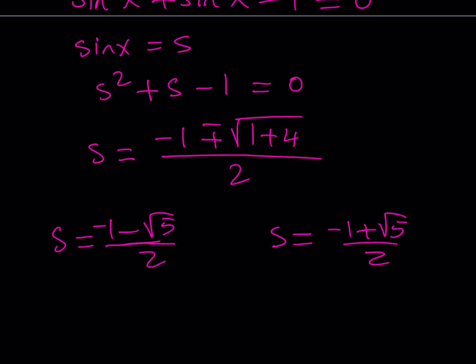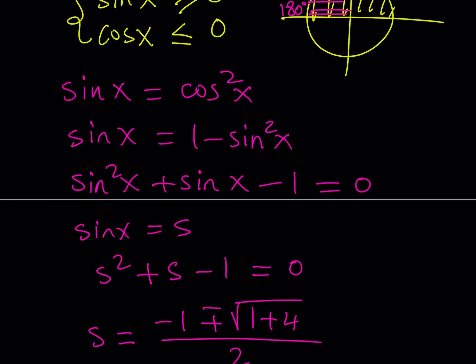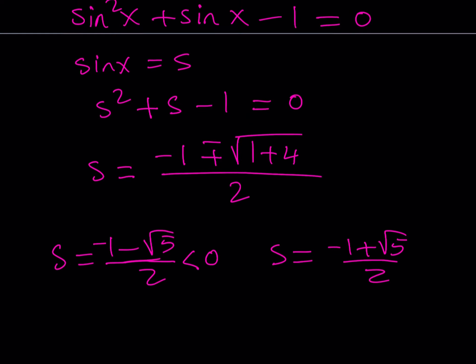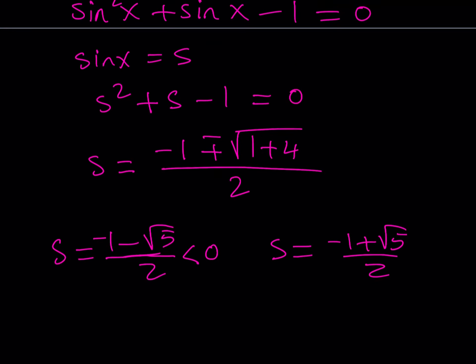Notice that negative 1 minus root 5 over 2 is negative. This is less than 0 and we don't want the negative solutions because sine x needs to be greater or equal to 0. But not only that, this value is also less than negative 1 so it's not even acceptable. This is not acceptable at all.